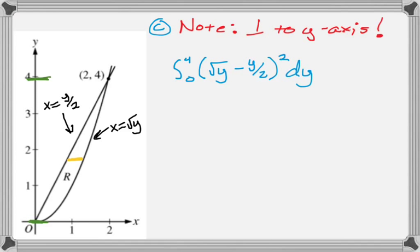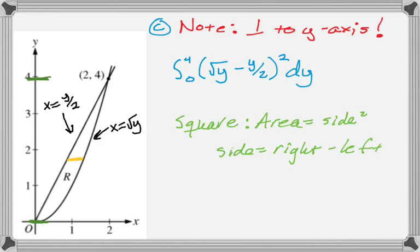So, that's actually the answer to this, but let me just explain a little more. So, the cross-sections are squares, and the area of a square is side squared. And then, in this case, because we're perpendicular to the y-axis, the side is going to be the right-hand curve minus the left-hand curve. And you can see that the right-hand curve and the left-hand curve are those.